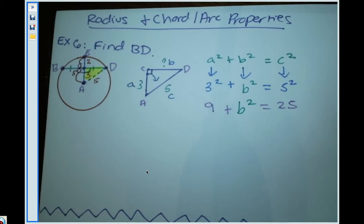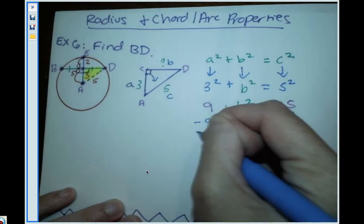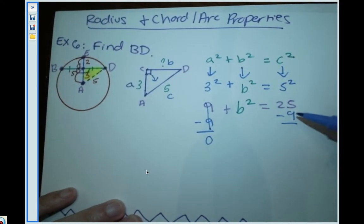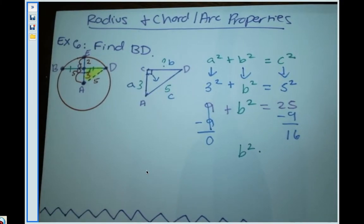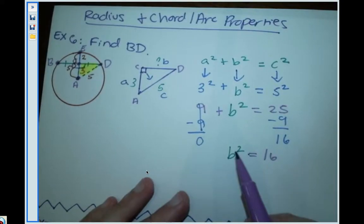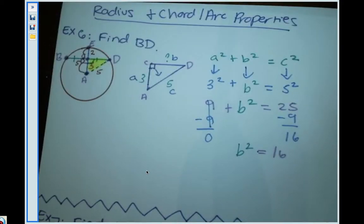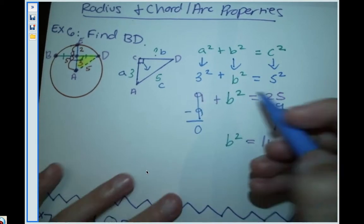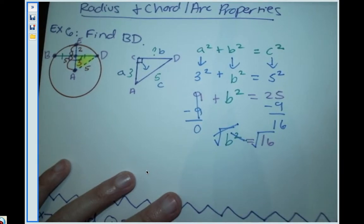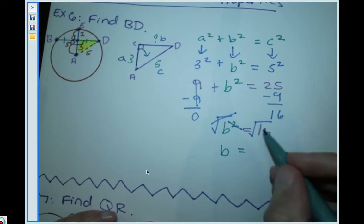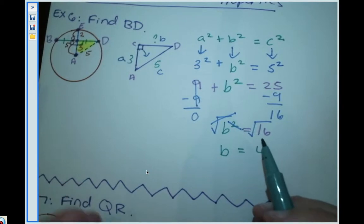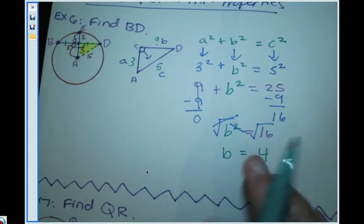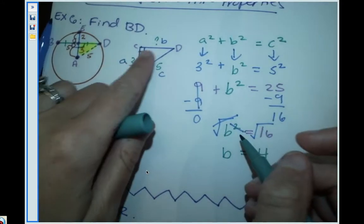To solve for b, subtract 9 from both sides: b² = 25 − 9 = 16. Then take the square root of both sides — the square root cancels the squared — giving b = √16 = 4. A negative length doesn't make sense, so we take the positive value. Side b, which is secretly CD, equals 4.